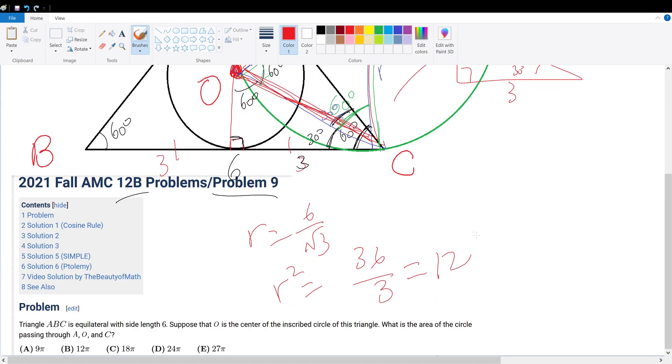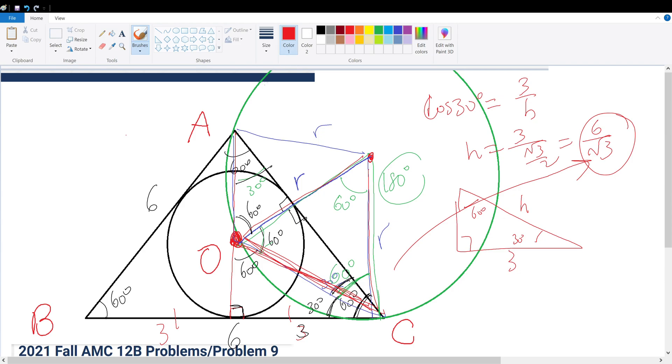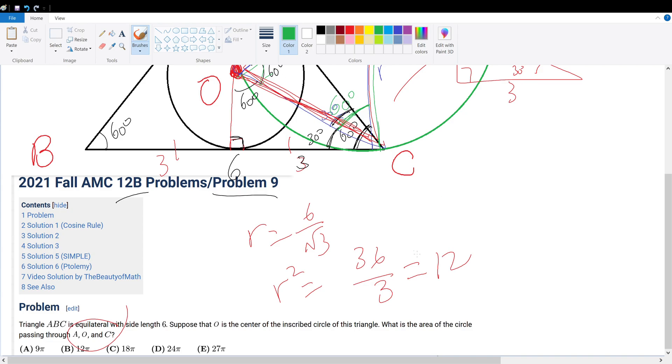And they want us to find the area of a circle that passes through A, O, C. So this green circle, this big green circle right here. And since we know the radius squared of this big green circle to be 12, our answer would be 12π, or answer choice B.